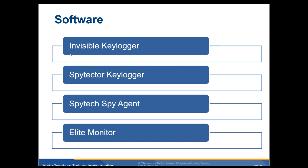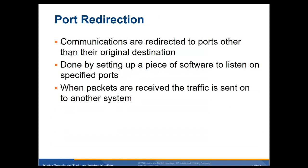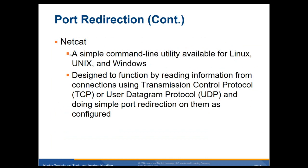Some different keylogger software examples include Invisible Keylogger, Spy Tech Spy Agent, Specter, Keylogger Elite, and Monitor. Many of these are also available for legitimate parental monitoring use, like Net Nanny. Port redirection: communications are redirected to ports other than their original destination by setting up software to listen on a specific port. When packets are received, the traffic is sent to another system — capturing your packets that way.